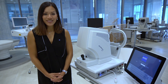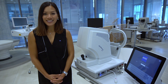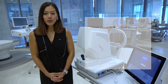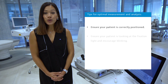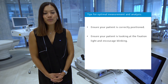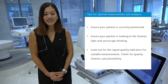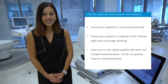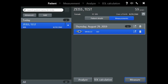That concludes the ZEISS IOLMaster 700 measurement and analysis tutorial video. Here are the top 3 tips to remember. Ensure your patient is correctly positioned to reduce the risk of measurement errors. Ensure your patient is looking at the fixation light during measurement and encourage blinking before measurement to ensure a continuous tear film. Look out for the signal quality indicators for suitable measurements — check for quality, fixation and plausibility. And always remember, you can simply access the user manual by tapping on the question mark icon. Thank you for watching.